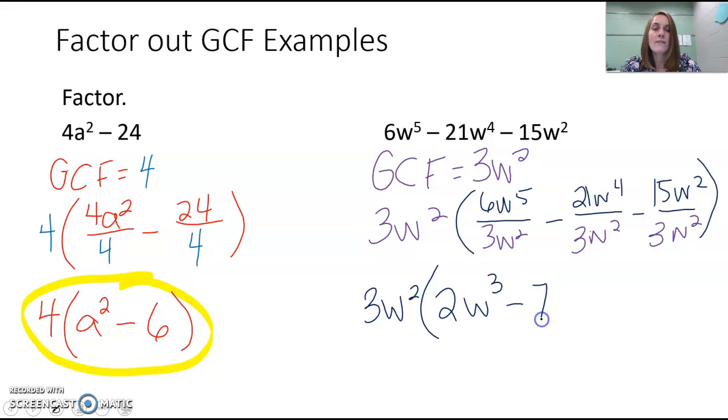21 divided by 3 is 7. I have 4w's and I divide 2 out, so I have 2 left over. And 15 divided by 3 is 5. And I had 2w's and I took 2w's out, so they're all gone. So we're left with 3w squared times the quantity 2w cubed minus 7w squared minus 5.